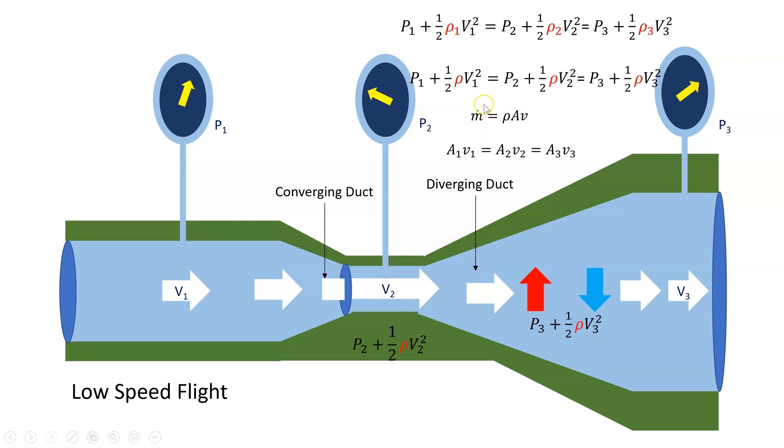If there's a constant mass, so there's one kilogram of air flowing through here, then there's one kilogram here and there's one kilogram here. If the density is constant, then we will say that the area times the velocity is a constant. So A1V1 equals A2V2 equals A3V3.